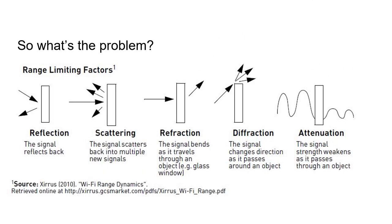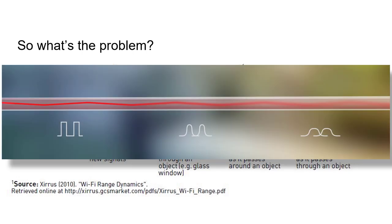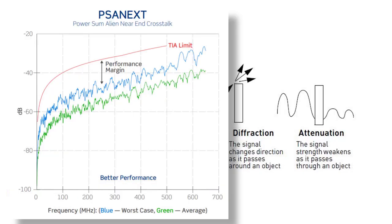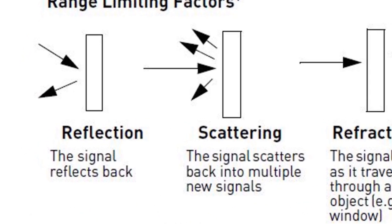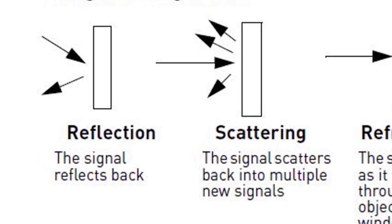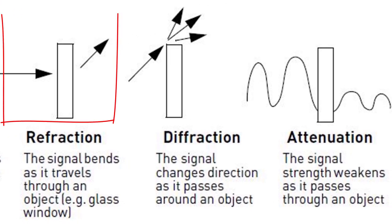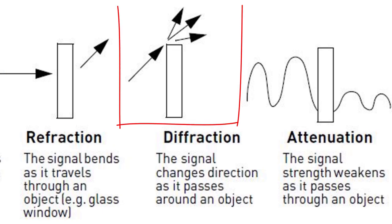So what are the problems that face digital transmission? These signal characteristics that we're going to talk about impact RF, laser, twisted pair, you name it. Things like reflection, where the signal reflects back into the receiver. Scattering, where the signal scatters back into multiple new signals. Refraction, where the signal bends as it travels through an object such as glass. This impacts laser and fiber optics a lot. Diffraction, where the signal changes direction as it passes around an object.